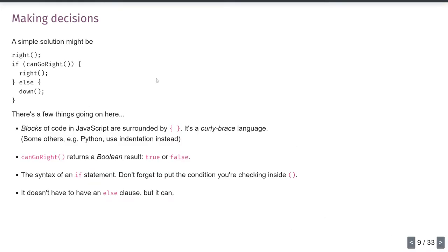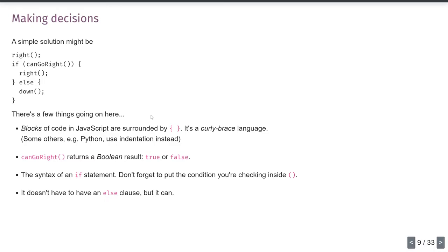A few things to note: blocks of code are marked by curly braces — it's a curly brace language, whereas languages like Python use indentation. Also, canGoRight() returns a Boolean result — true or false. If I print out the result of canGoRight(), it prints out 'true'. This is a Boolean value. Whereas if I miss out the parentheses and just pass the function itself to println, I get a curious error — the error is actually that I didn't put the parentheses in.